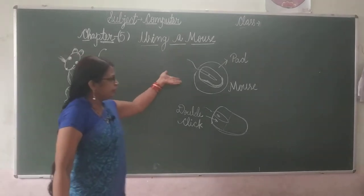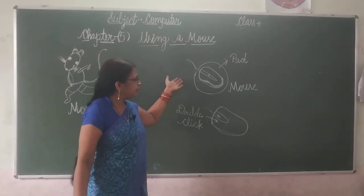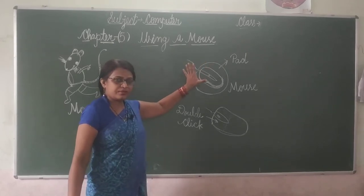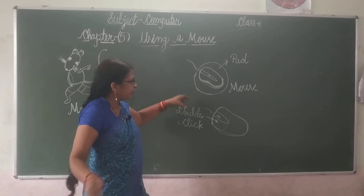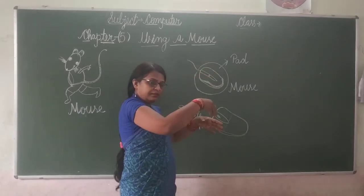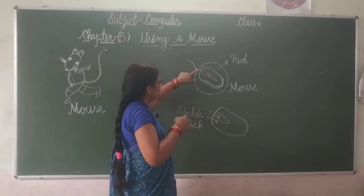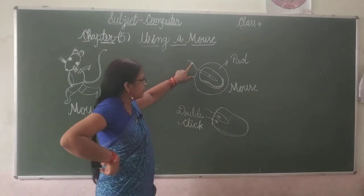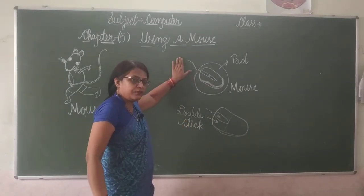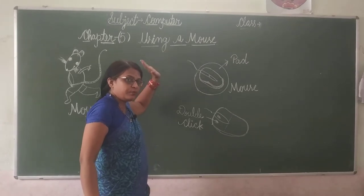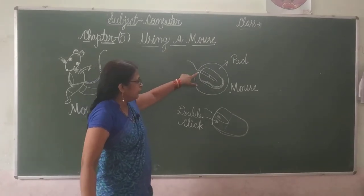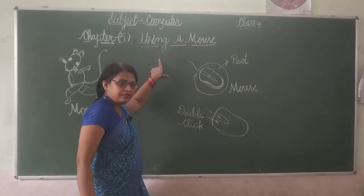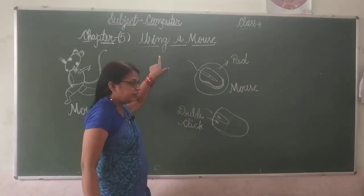Look at my next picture. What is this? This is a computer mouse. It sits on the table. And it has — what is this? Yes, a tail. It is fixed on the computer with this wire.